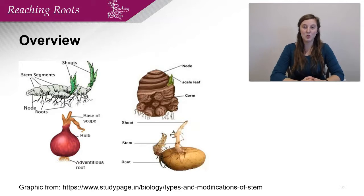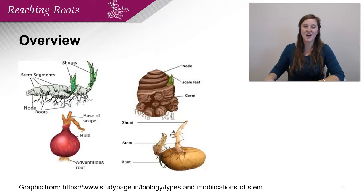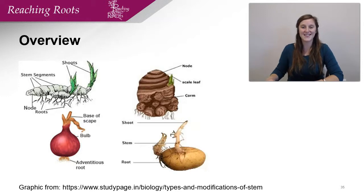Although we usually think about roots being underground, plant stems and leaves can also modify their growth to be vital organs underneath the ground. The four examples that we're going to go through are rhizomes, corms, bulbs, and tubers. Not all plants have these underground stem tissues, but for the plants that do have them, they're incredibly important for their survival and reproduction, and they can also be important food for us as well.